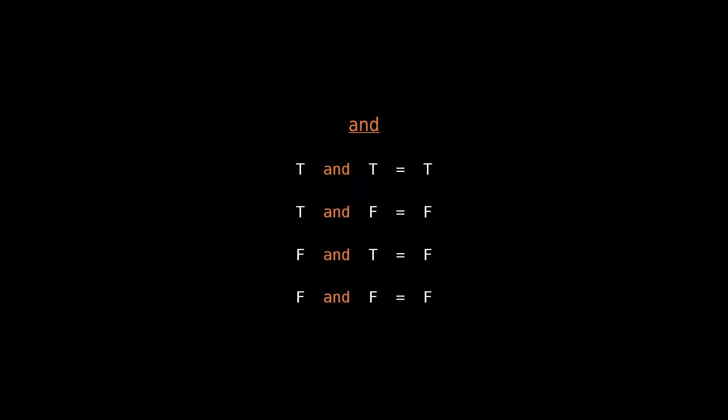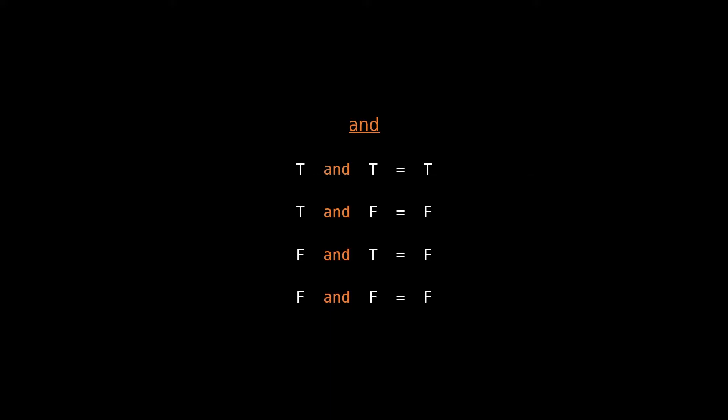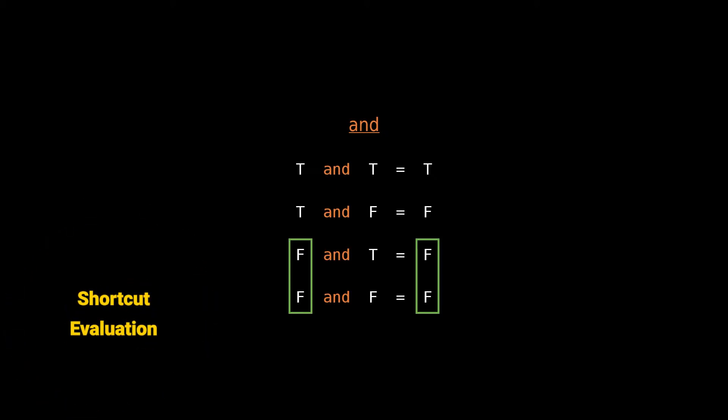Now let's talk about the AND operator. With an AND operator, to have a result of true, the first and second operand must both be true. If one or both are false, the result will be false. Looking more carefully, if the first operand is false, the result will always be false — we don't even need to check the second operand. This is called shortcut evaluation, meaning the second operand is only evaluated if needed, which is much more efficient.